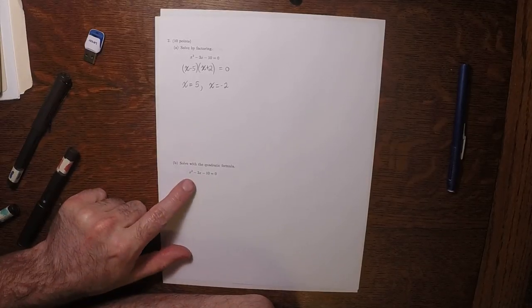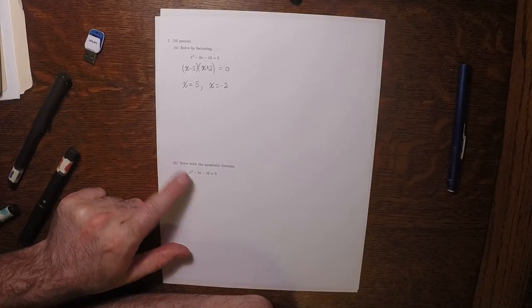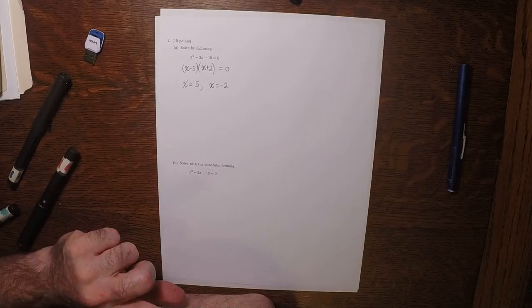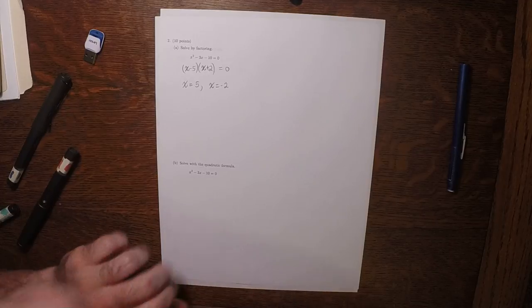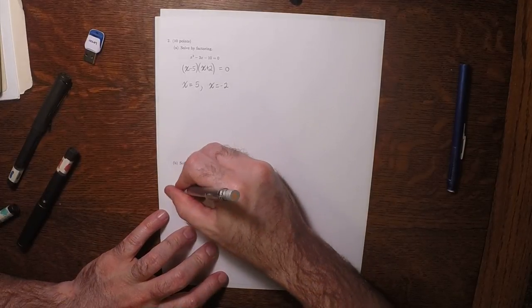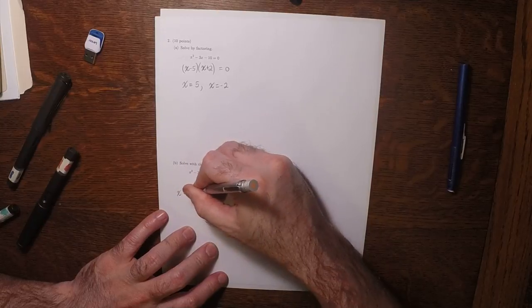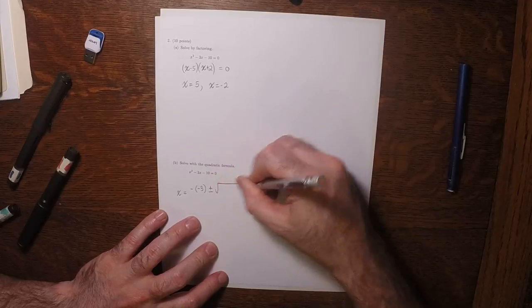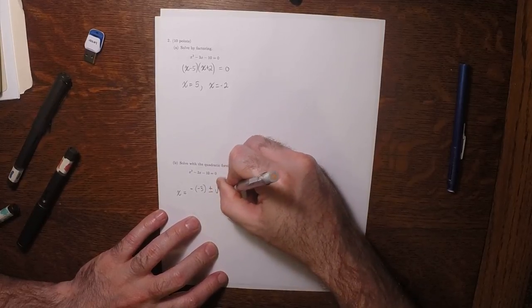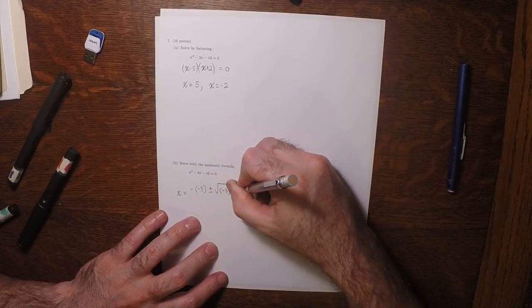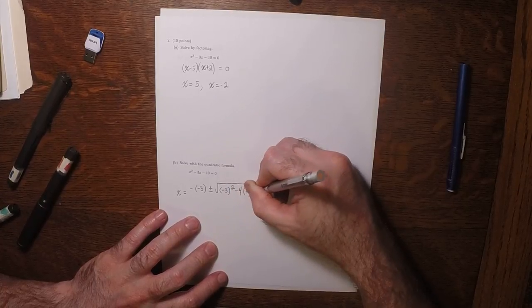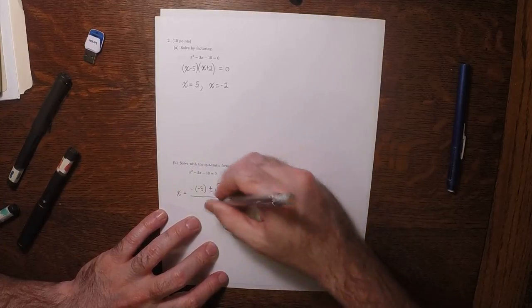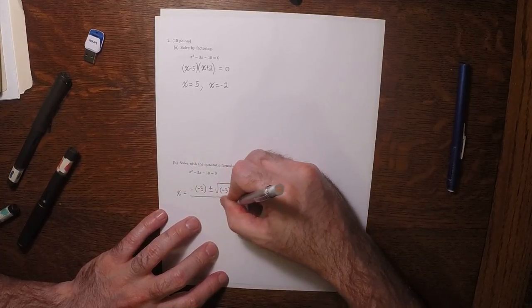Now we have the exact same quadratic equation, except now we're told to use the quadratic formula. So x is negative negative 3, plus or minus the square root of negative 3 squared, minus 4 times 1 times negative 10, all over 2 times 1.